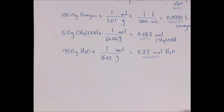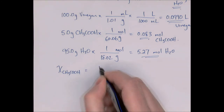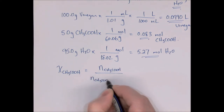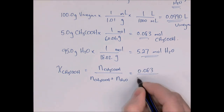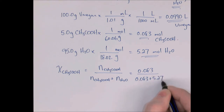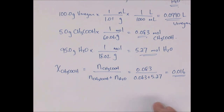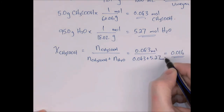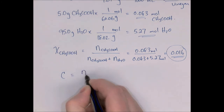Mole fraction of acetic acid = 0.083 ÷ (0.083 + 5.27) = 0.016. This is very low because most of the moles in solution are water. Again, mole fractions have no units since moles divided by moles cancel out.